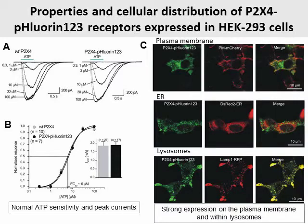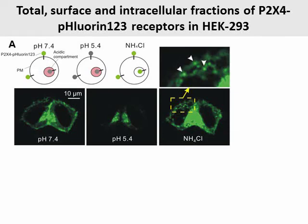To characterize its distribution, we explored co-localization between P2X4 fluorine-123 with plasma membrane marker PM-M-Cherry, ER marker D3-2-ER, and lysosome marker LMP1-RFP. Our data indicate that P2X4 fluorine-123 was expressed predominantly on the plasma membrane and within lysosome compartments. In contrast, we found little co-localization between P2X4 fluorine-123 and ER. Next, we explored the pH dependence of fluorine to quantify the fractions of P2X4 fluorine-123 receptors in different compartments of HEK cells.